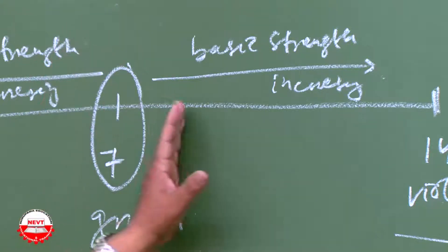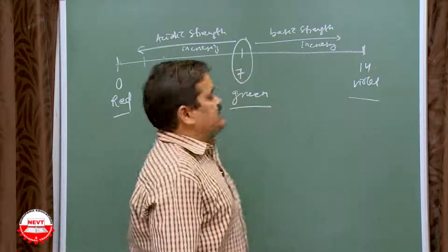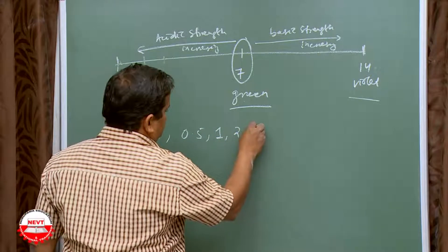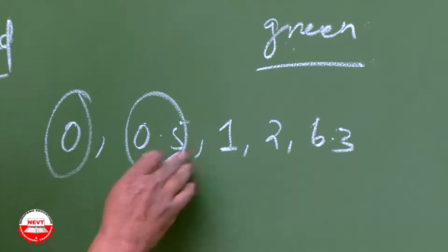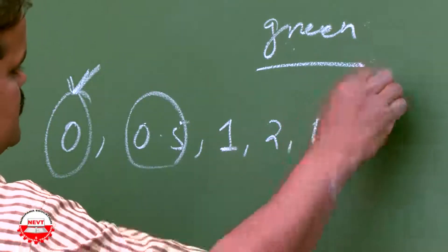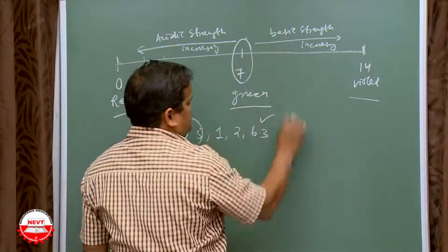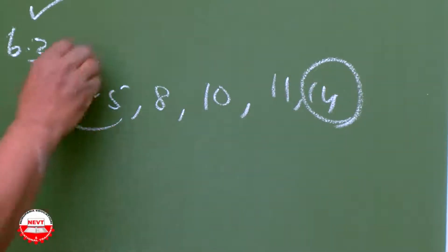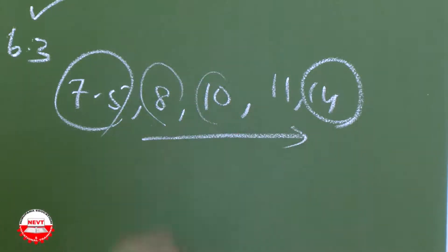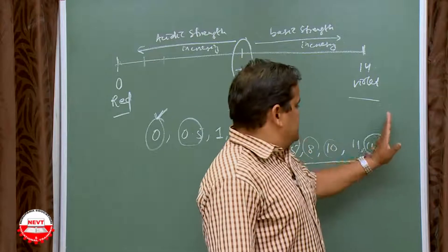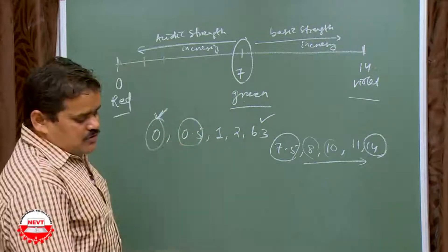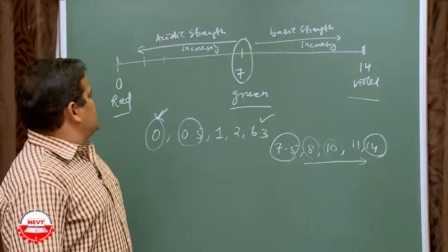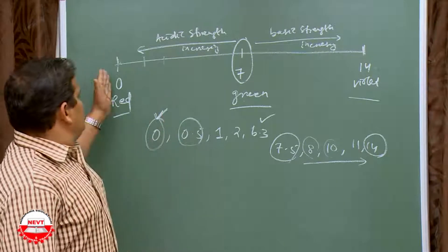After pH 7, as the pH value goes on increasing, basic strength goes on increasing. So pH 0 means strong acid, pH 14 means strong base, and pH 7 means neutral. For example, pH 0, 0.5, 1, 2, 6.3 — these represent strong acid down to very weak acid. pH 14 means highly strong base, while values like 7.5, 8, 10, 11, 13 are progressively stronger bases.